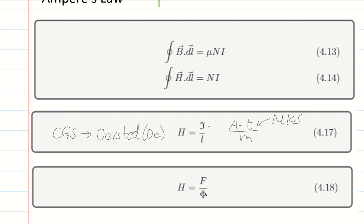Another way of measuring the magnetic field intensity is in CGS — we call it the Oersted. One Oersted is equivalent to approximately 79.5 ampere-turns per meter. That's the conversion between CGS and MKS units.